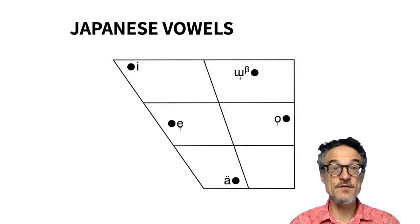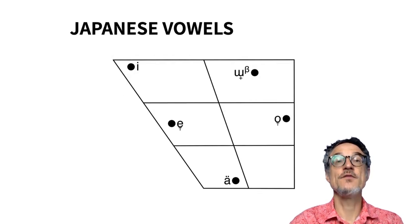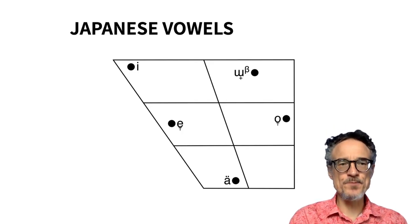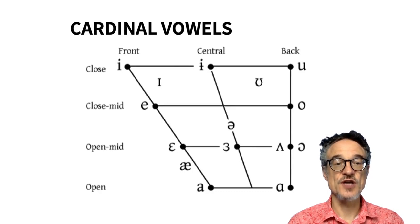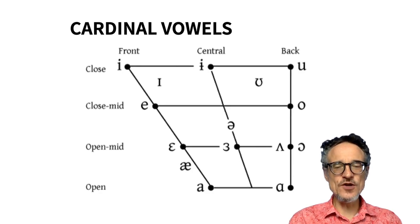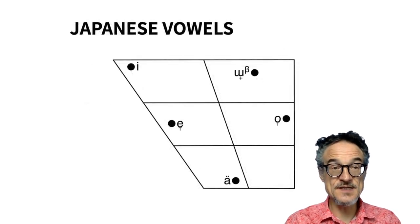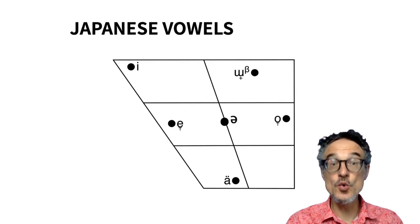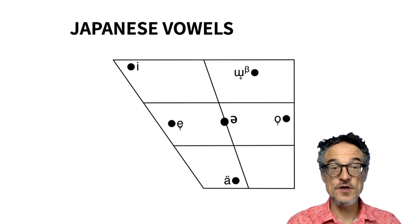Japanese is quite simple — it has five vowels: A, I, U, E, O. E is a high front vowel, A is a low vowel, U is a back high vowel, O is a back mid vowel. English has what are called cardinal vowels. The main difference is that if you add the A sound to Japanese's A, I, U, E, O, then you're close to English pronunciation.